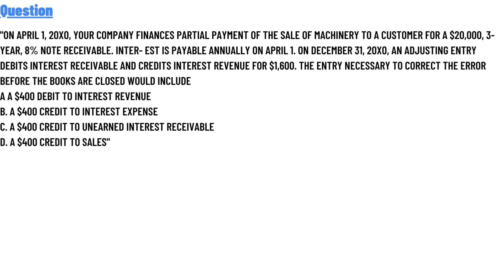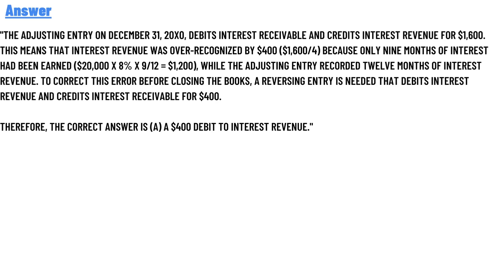The entry to correct the errors before the books are closed would include: Option A — $400 debit to interest revenue; Option B — $400 credit to interest expense; Option C — $400 credit to unearned interest receivable; Option D — $400 credit to sales.